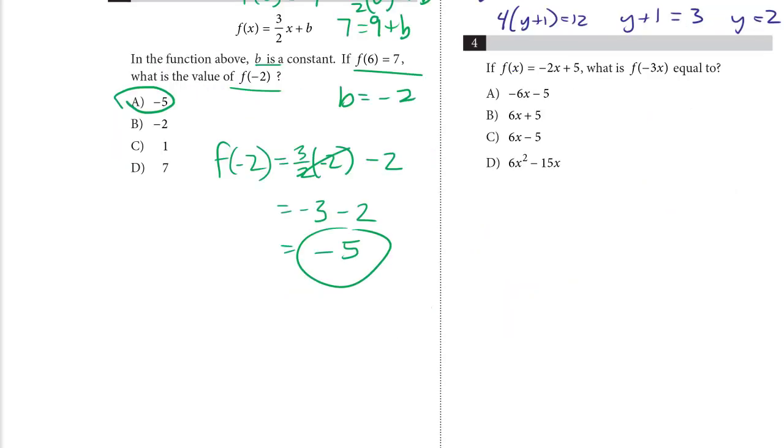Number 4: if f of x equals minus 2x plus 5, what is f of minus 3x equal to? Well, don't be confused that there's an x in the value for x. That's probably not something you're used to seeing, but let's take a look at what that is. It just means whatever that is, plug that in for the x in the function.